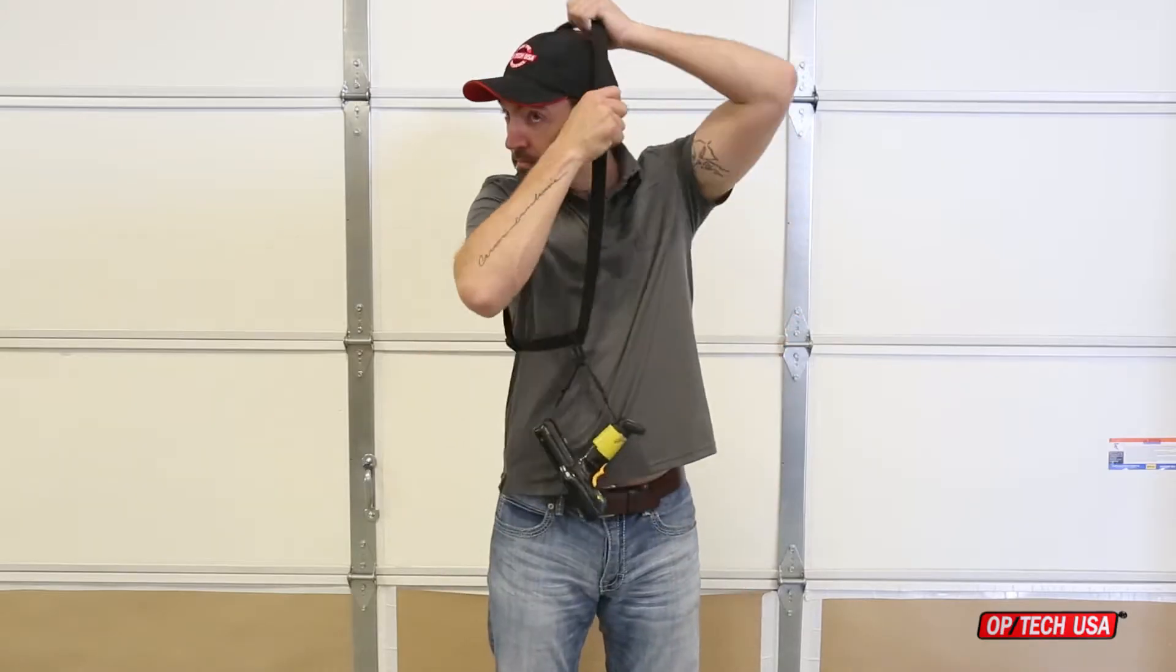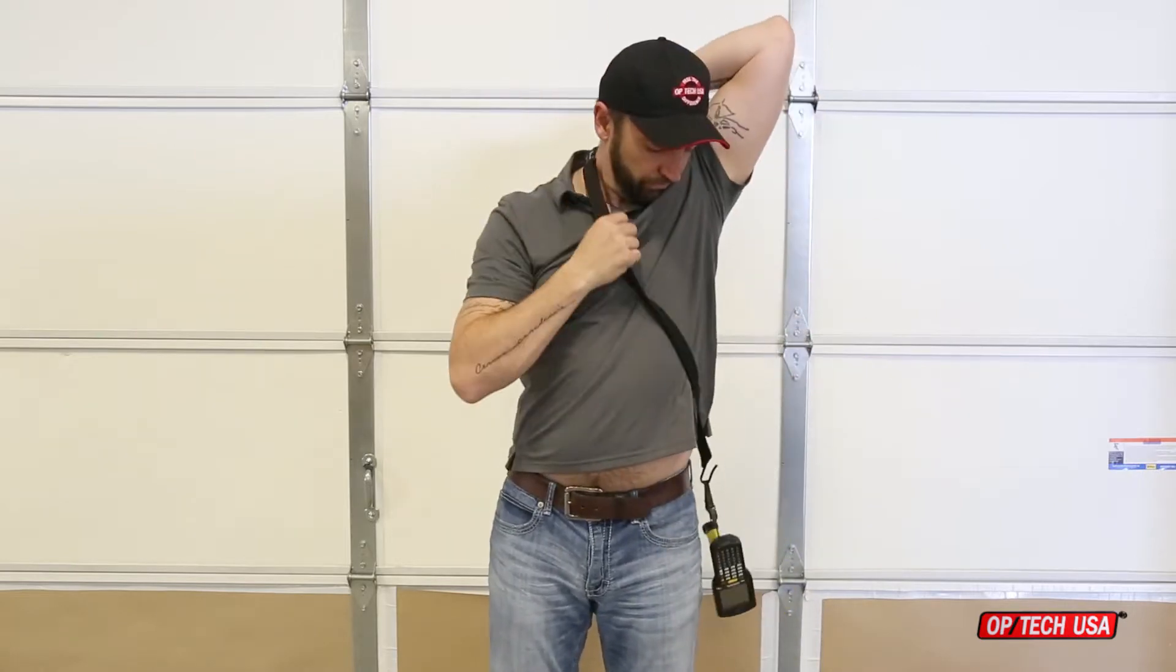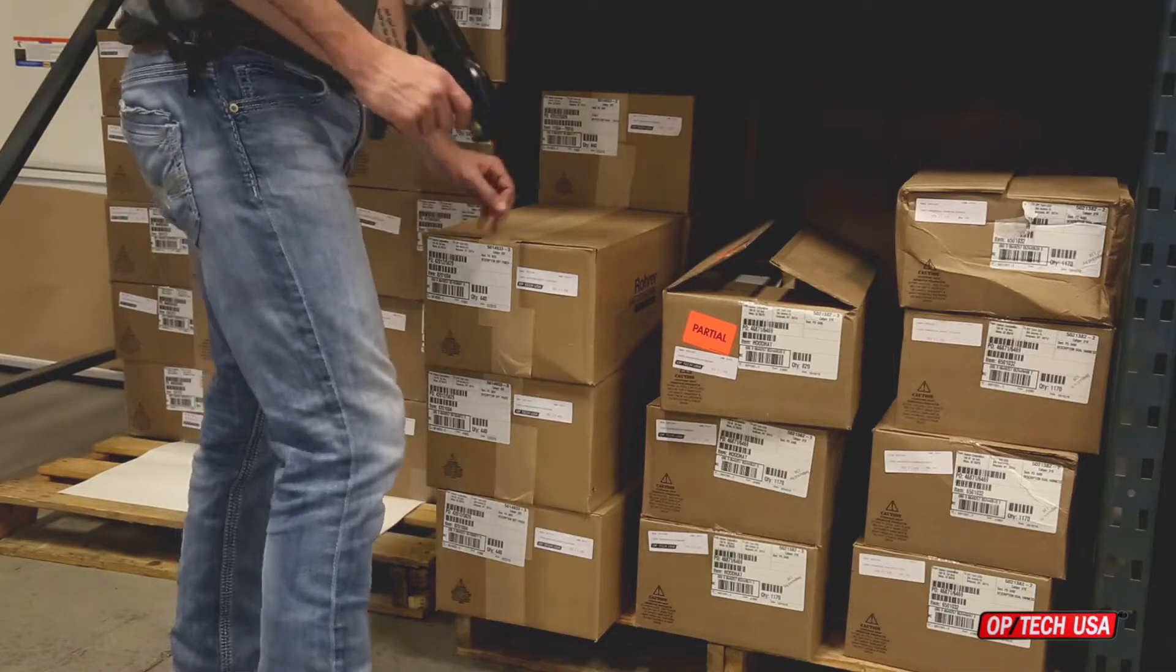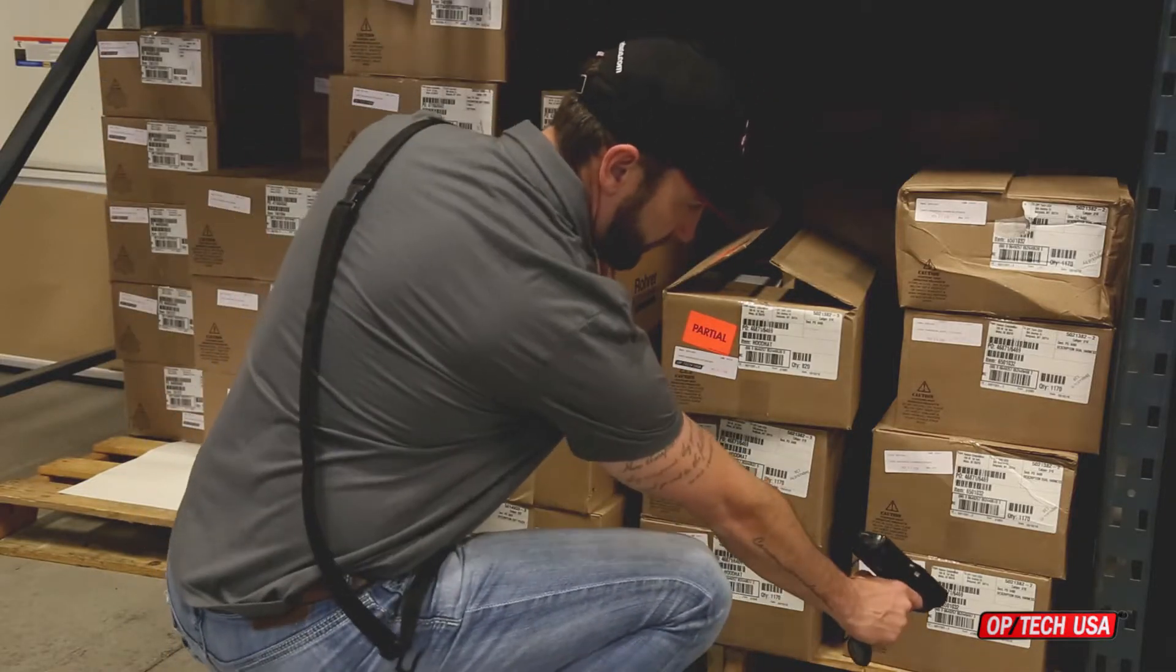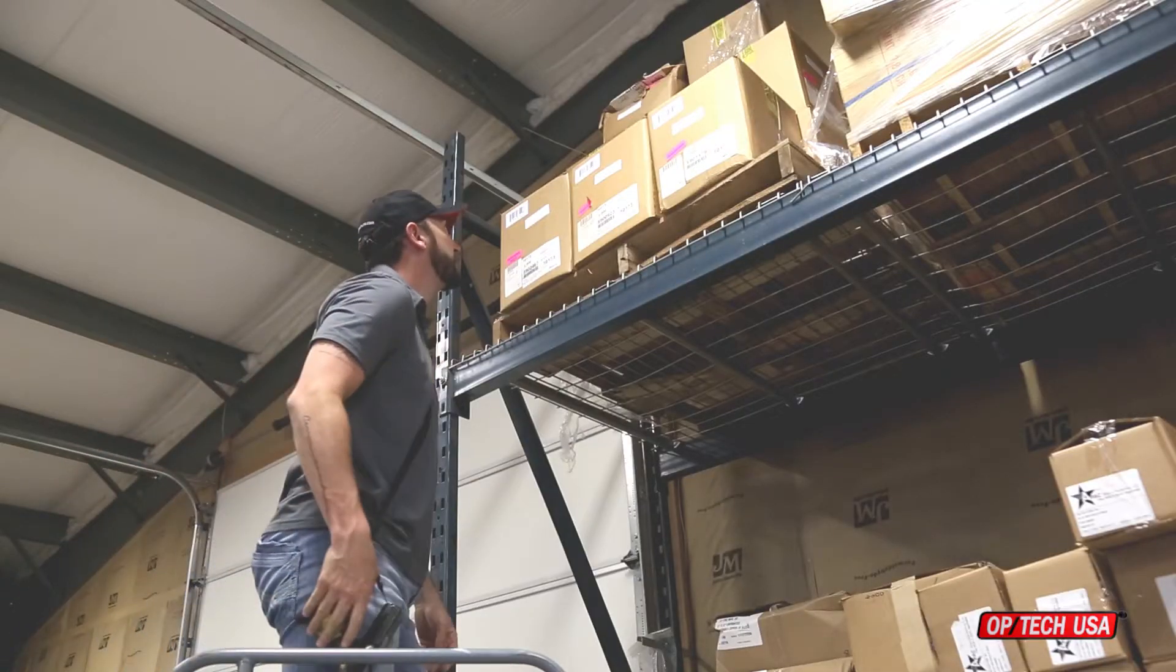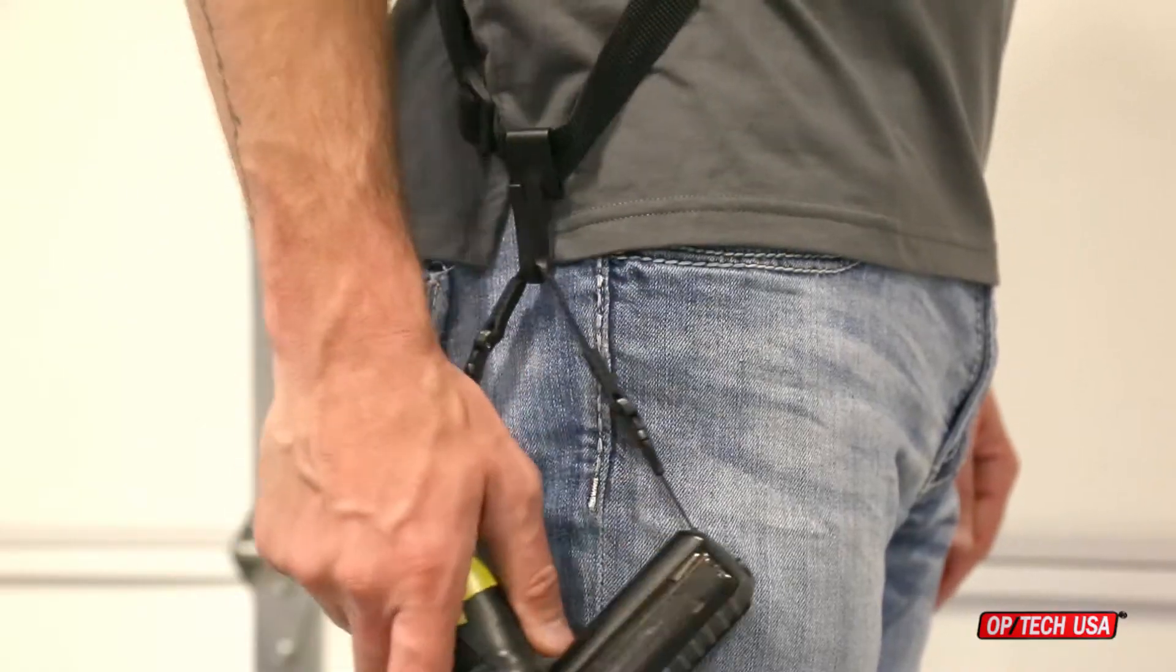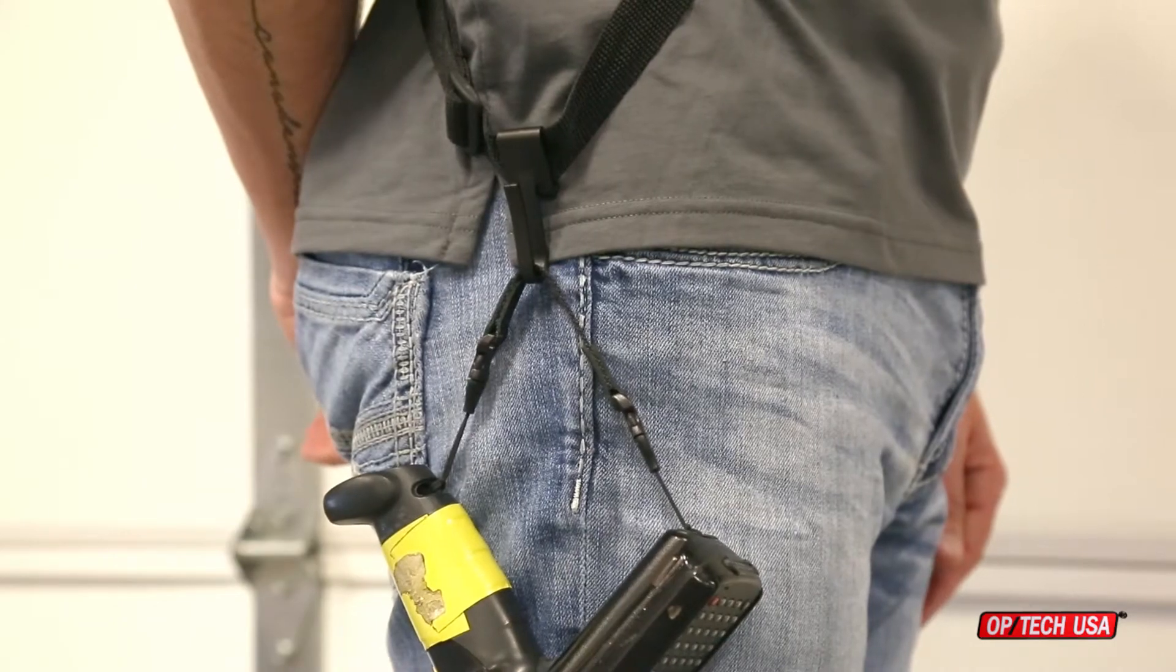The scanner hook strap can be comfortably worn on either shoulder for right-handed or left-handed use. When scanning barcodes at any level, from reaching down to the floor to reaching high above the head while atop a ladder, the scanner hook strap allows for a full range of motion with the convenience of being able to hook the scanner at the waist at any time.